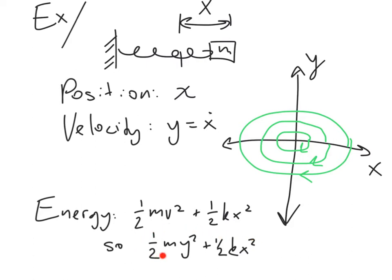Our total energy is 1/2 m y squared plus 1/2 k x squared, and our total energy is going to be constant for this system.